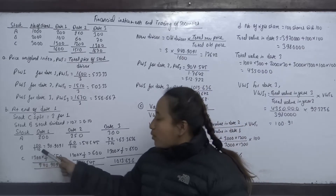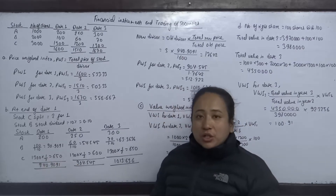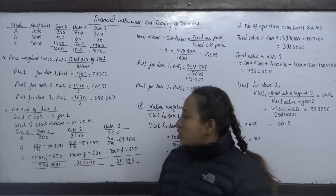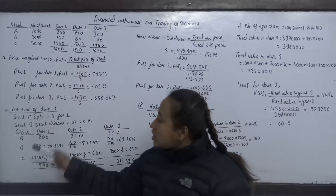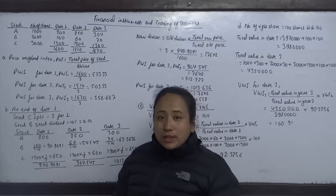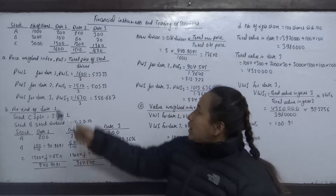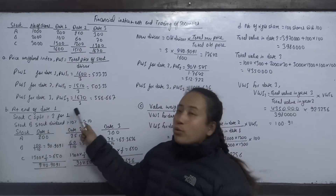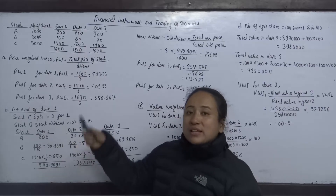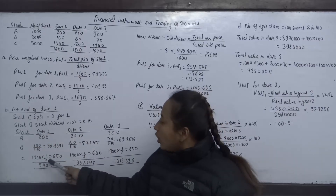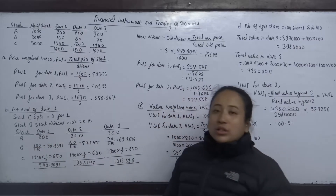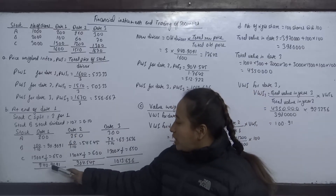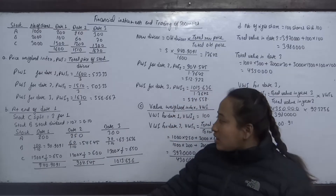After a stock dividend, the adjusted price equals old price divided by (1 plus percent of stock dividend). For stock B with a 10% dividend, the adjusted price is 100 divided by 1.10, giving 90.9091. For stock C with a 2-for-1 split, the adjusted price is 1,300 multiplied by 1/2, giving 650. The new total price is 940.9091.